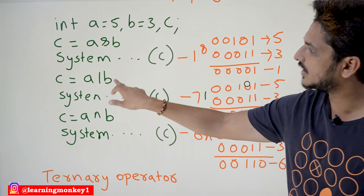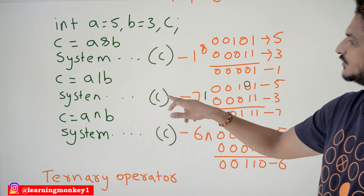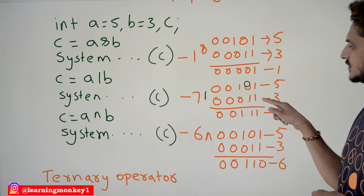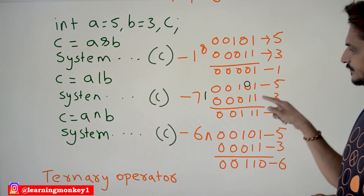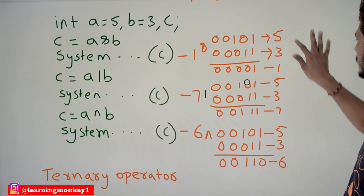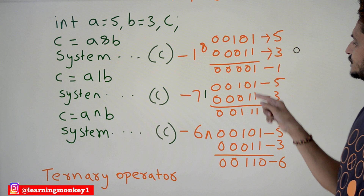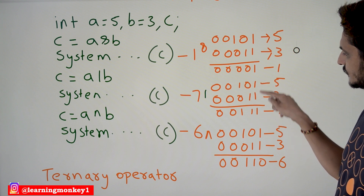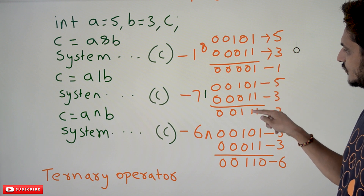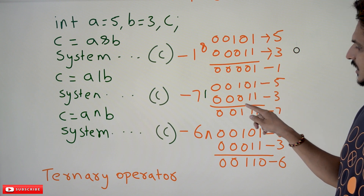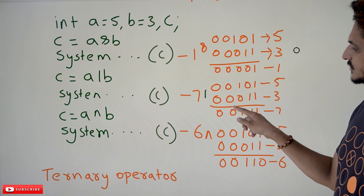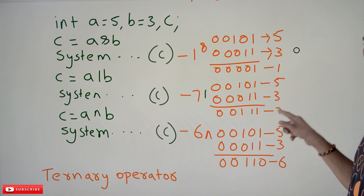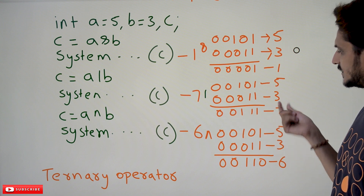Similarly, A OR B assigned to C is going to give you 7. See, 5 in binary is 1,0,1 and 3 in binary is 0,1,1. Applying OR: 1 OR 1 = 1, 0 OR 1 = 1, 1 OR 0 = 1, and the remaining bits are 0 OR 0 = 0. This gives 0,0,0,0,0,1,1,1, which is equivalent to 7.